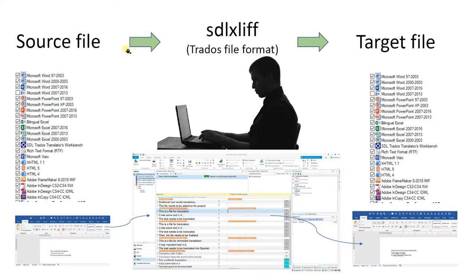We start with a source file which is then converted into an sdlxliff — that's the Trados file format — and then finally, after all the translation is completed, we convert it into a target file. So for example, if you start with a Word file, the Word file is converted into an sdlxliff, and then when you're done with the translation you save as target, create the target file, or export the translation into the original format so you end up with a translated Word file.